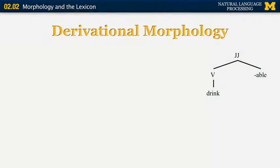If we look at the word 'drinkable,' the whole word is an adjective — JJ is the standard label in natural language processing for adjectives. We know that 'drinkable' is formed by converting the verb 'drink' into an adjective by adding the suffix '-able.' We can represent the whole word 'drinkable' as a tree which has the verb 'drink' first, the suffix '-able,' and those two combined form the new word 'drinkable.'